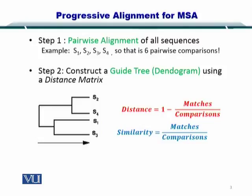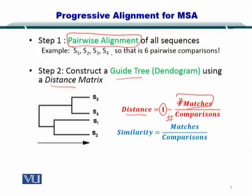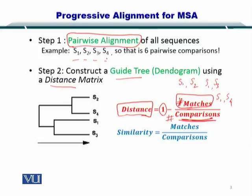So how do you compute the distance matrix? The distance matrix is simply: distance equals 1 minus the number of matches over number of comparisons. Since you have already performed the pairwise alignment, you already know how many matches exist between S1 and S2, S1 and S3, and S1 and S4. Since you know the number of matches as well as the number of comparisons, you can easily compute the distance between each one of these sequences.